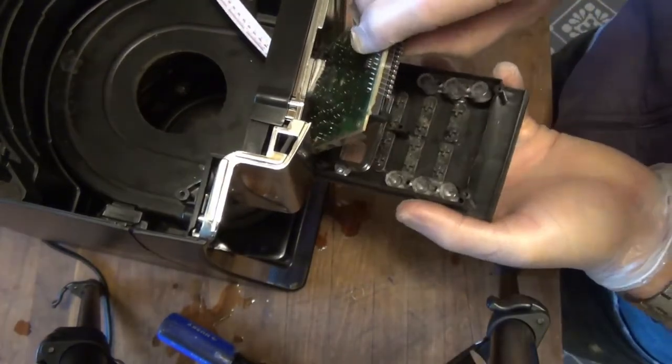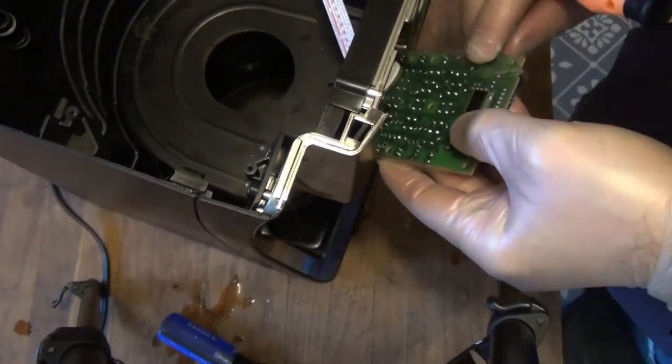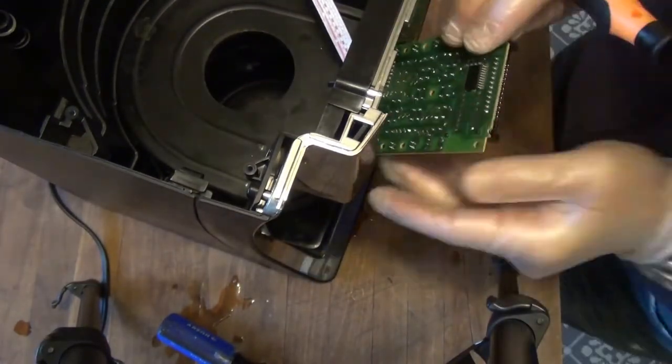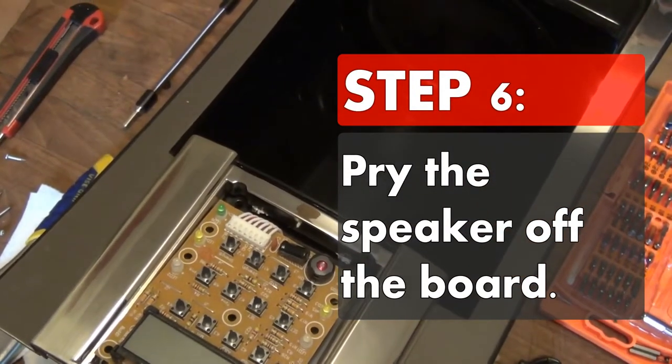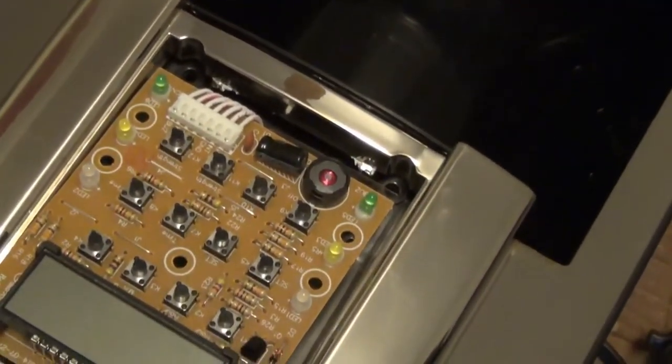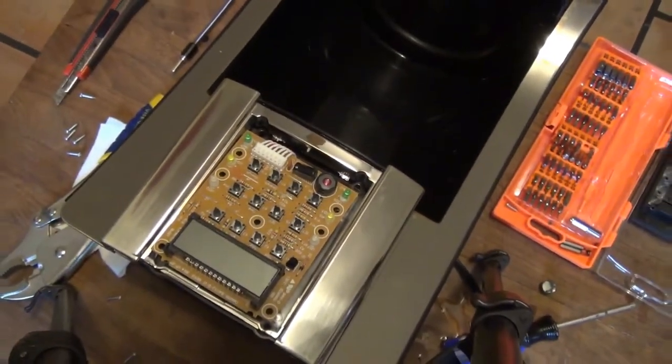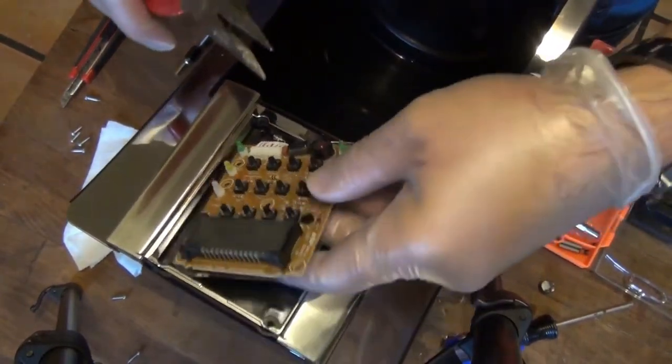Now you can pull the circuit board away from the face. Try to keep that little piece of plastic on the back there. And now here it is, the speaker. This is what you've been looking for. This small black circle with the red coil in the center. That's the source of your problems, and that's what you want to remove.